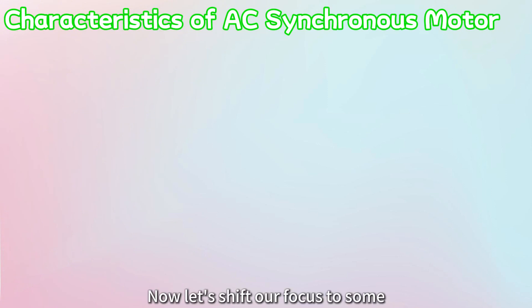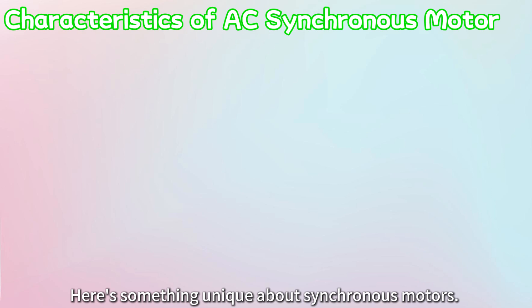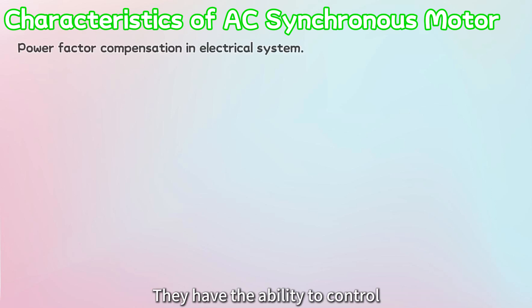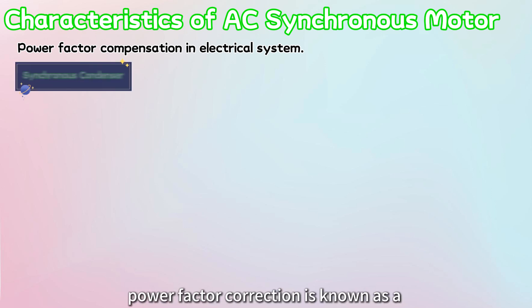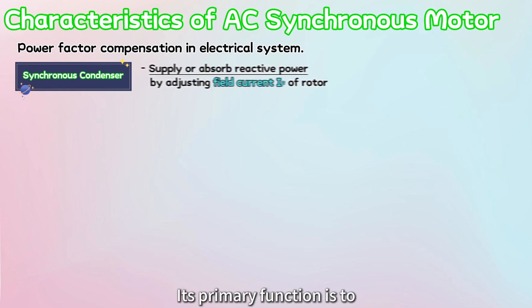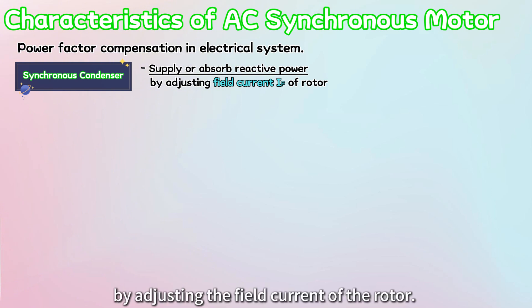Now, let's shift our focus to some characteristics of AC synchronous motor. Here's something unique about synchronous motors. They have the ability to control the power factor of an electrical system. A synchronous motor used for power factor correction is known as a synchronous condenser. Its primary function is to supply or absorb reactive power by adjusting the field current of the rotor.